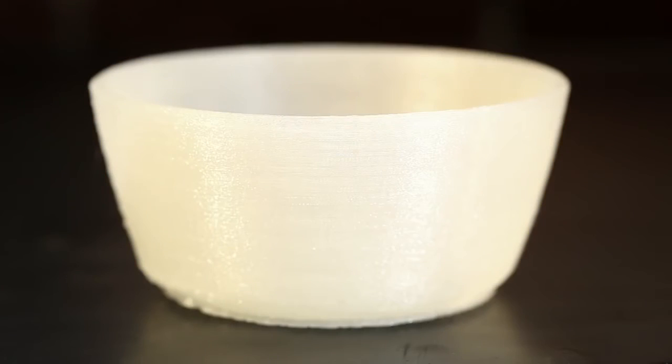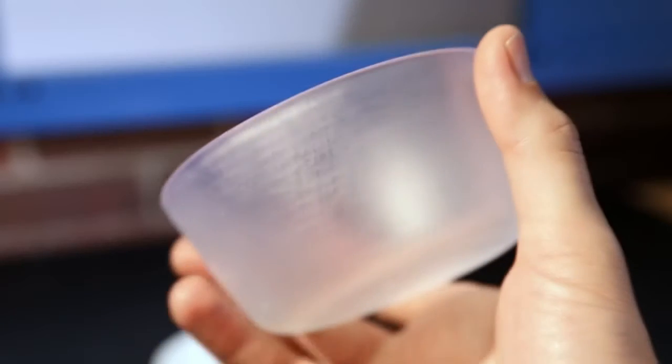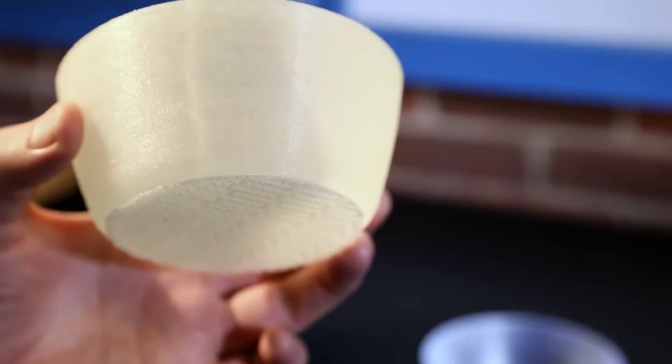Now let's compare how the Form 1 Plus parts stand up against a filament printer. The stereolithography part comes out nice and smooth but we can see and feel the ridges on the cup printed with filament.